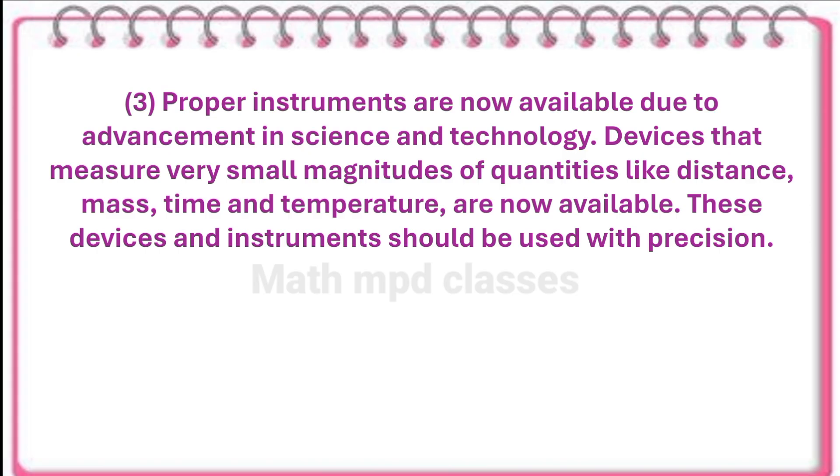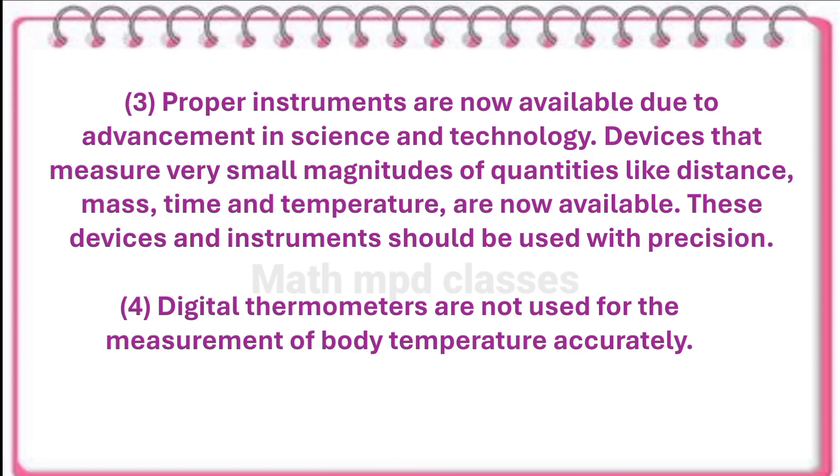Third point: proper instruments are now available due to advancement in science and technology. Devices that measure very small magnitudes of quantities like distance, mass, time, and temperature are now available. These devices and instruments should be used with precision. Fourth point: digital thermometers are now used for the measurement of body temperature accurately.